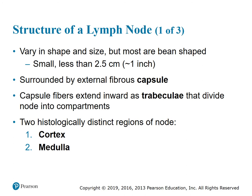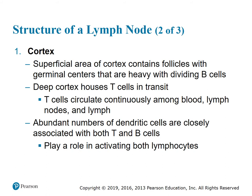The structure of a lymph node: it varies in shape and size but most are bean-shaped and small, less than 2.5 centimeters. They are surrounded by an external fibrous capsule. The capsule fibers extend inward as trabeculae that divide the node into compartments. Two histologically distinct regions of the node are the outer cortex and the inner medulla. The superficial cortex contains follicles with germinal centers that are heavy with dividing B cells. There is also a deep cortex that houses T cells in transit; T cells circulate continuously among blood, lymph nodes, and the lymph.